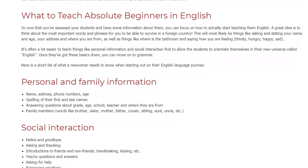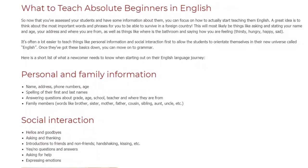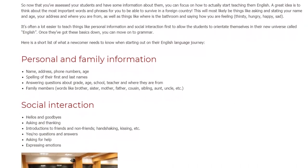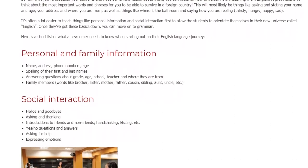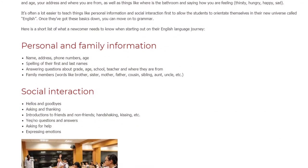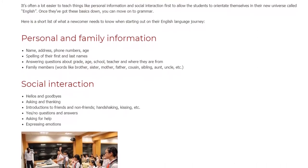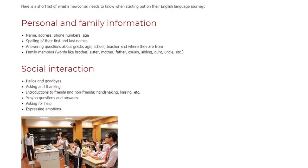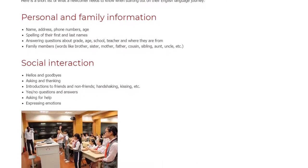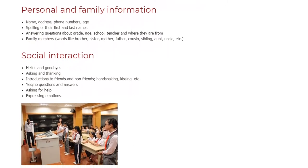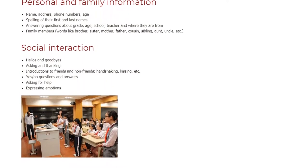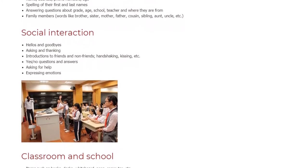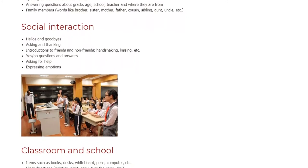What to teach absolute beginners in English? Now that you've assessed your students and have some information about them, you can focus on how to actually start teaching them English. A great idea is to think about the most important words and phrases needed to survive in a foreign country — things like asking and stating your name and age, your address, where you are from, where the bathroom is, and expressing how you are feeling: hungry, happy, sad. It's often a lot easier to teach personal information and social interaction first to allow students to orientate themselves in English. Once they've got these basics down, you can move on to grammar.